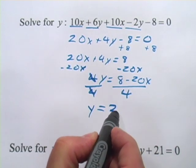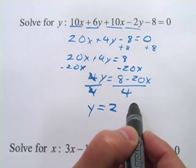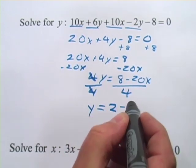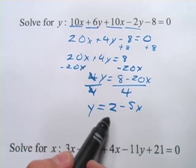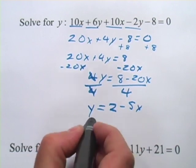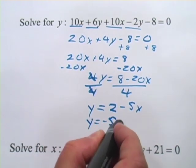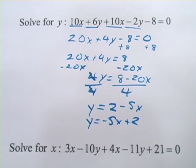On the right side of the equation, 8 divided by 4 is 2, and negative 20 divided by 4 is negative 5. So you get 2 minus 5x. Although in the answer, you might see it written y equals negative 5x plus 2. Those are really the same thing, just with the terms in a different order. So that's how to solve that equation for y.